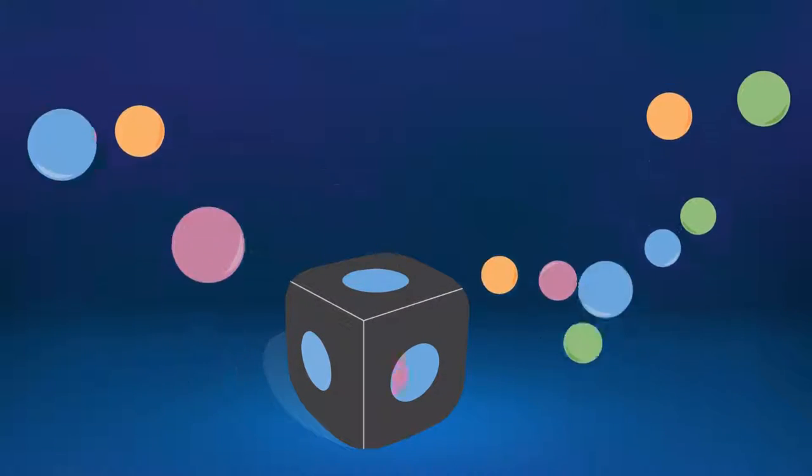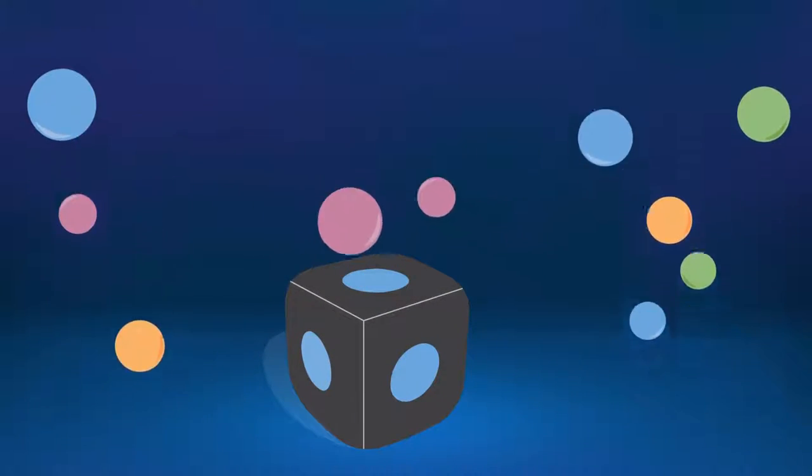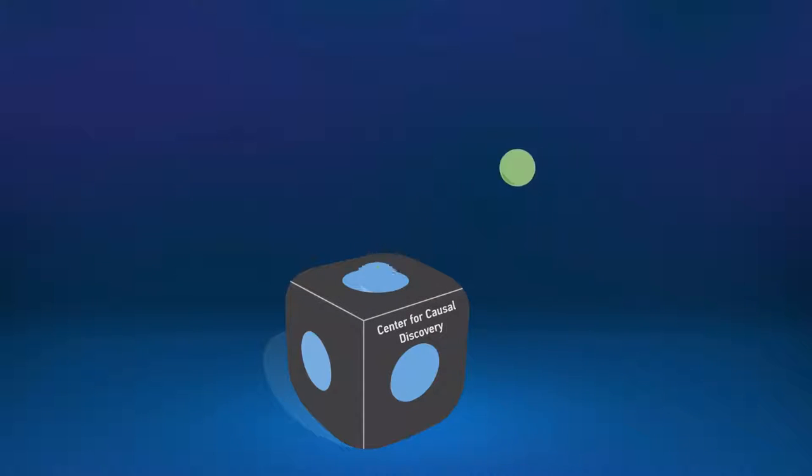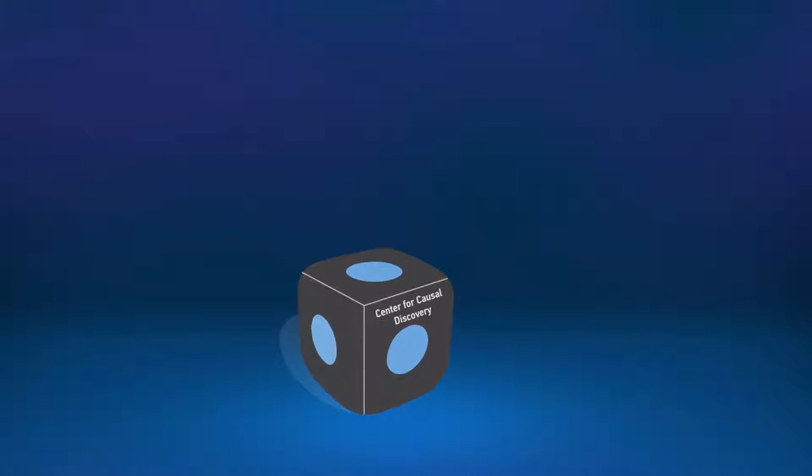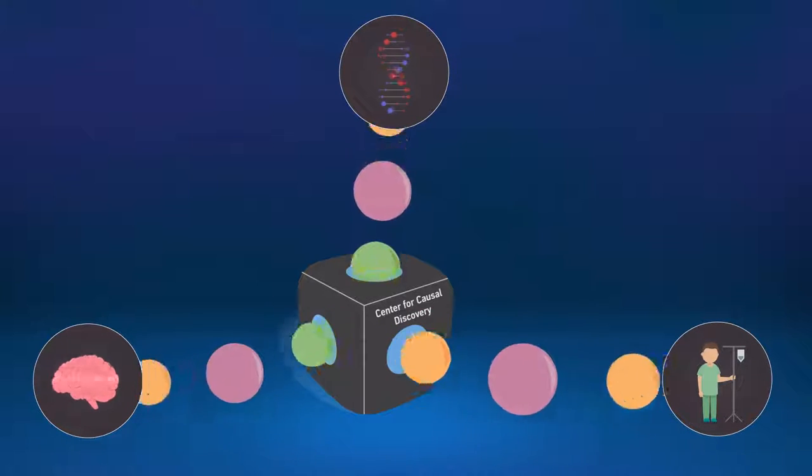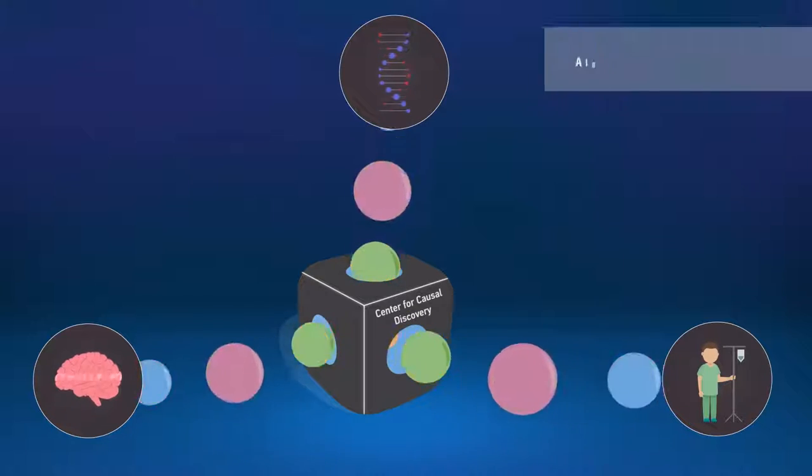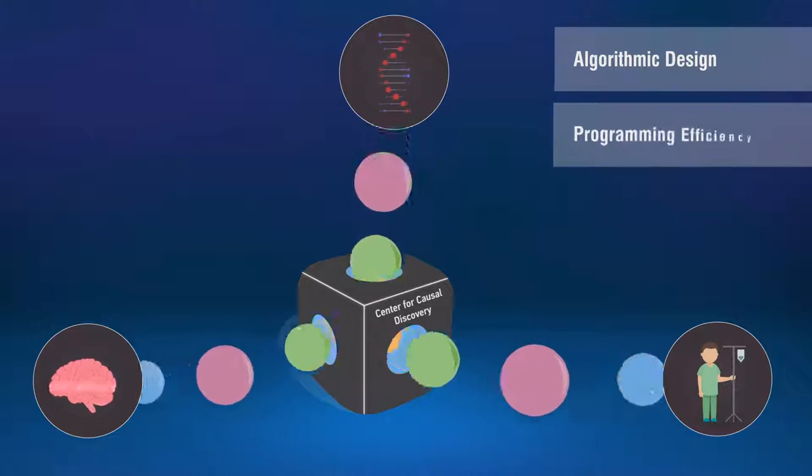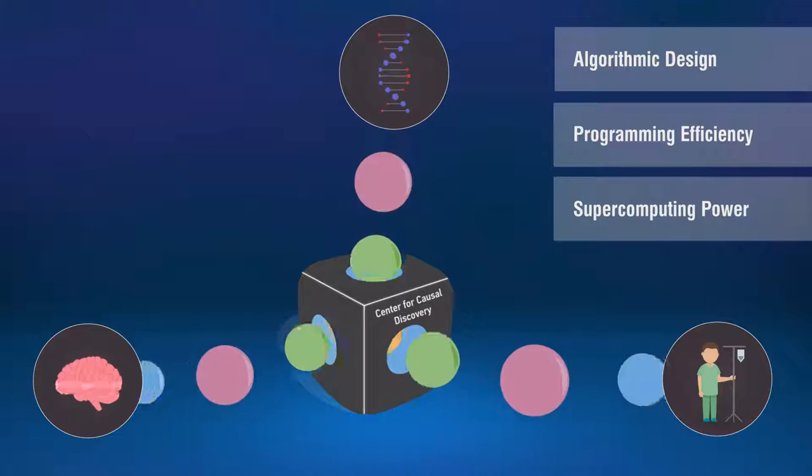However, algorithms to discover causal relationships from observational data do exist, and the Center for Causal Discovery is working to improve the ability of existing and new discovery algorithms to handle tens and hundreds of thousands of variables through advances in algorithmic design, programming efficiency, and supercomputing power.